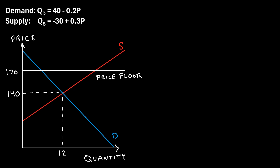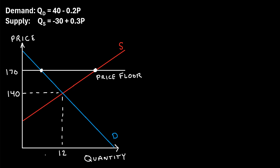Now let's imagine a scenario where the government steps in and imposes a price floor of $170. This means that you cannot buy this good for less than $170. Notice what happens to both the supply and the demand. The supply for this good, where the supply function intersects this price floor, is all the way out here. The quantity sold was 12 in a free market, but the quantity supplied has now increased, which makes sense because producers want to sell more at a higher price. But the quantity demanded has gone down — consumers don't want to pay such a high price for this good.